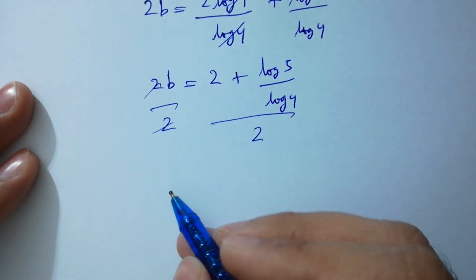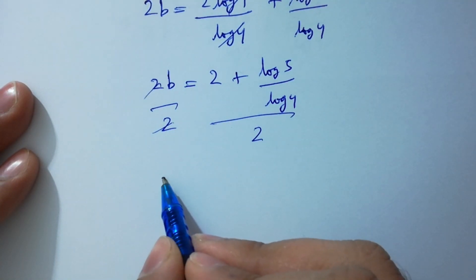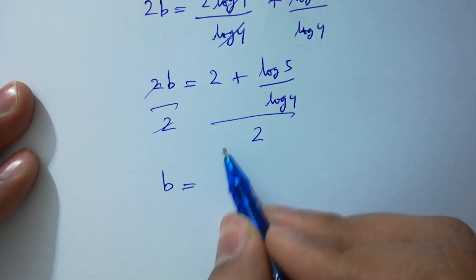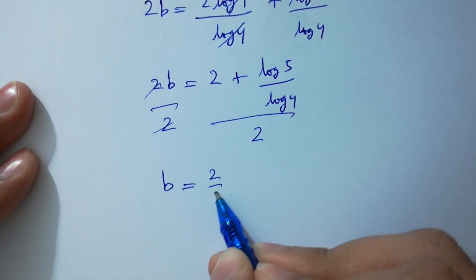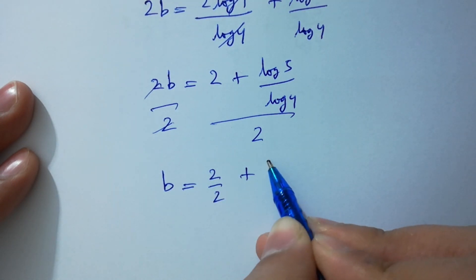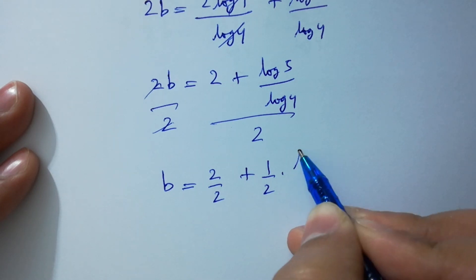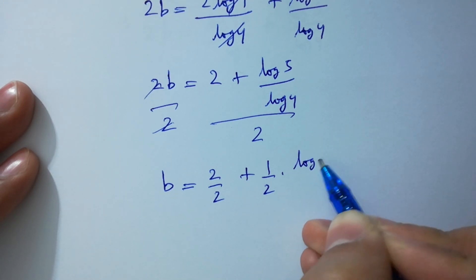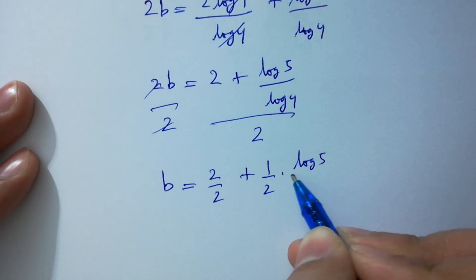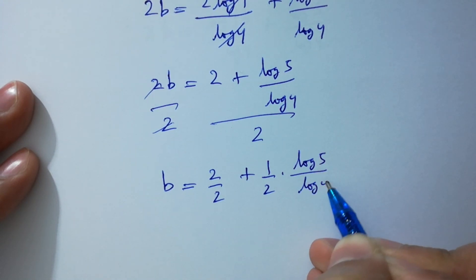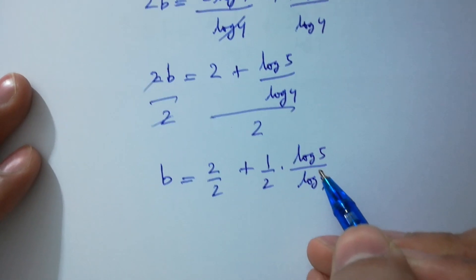2B equals 2 plus log 5 over log 4. Dividing both sides by 2, the 2s will be cancelled, giving B equals 1 plus 1 over 2 times log 5 over log 4.